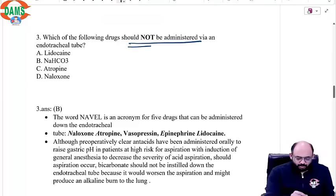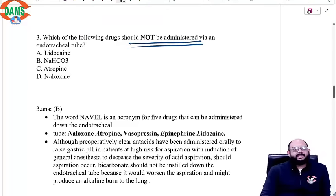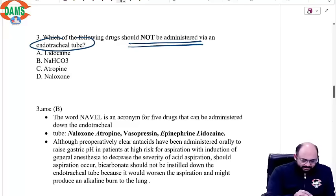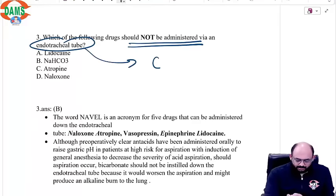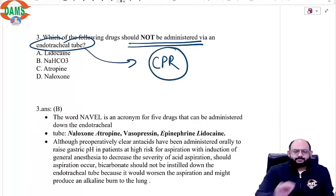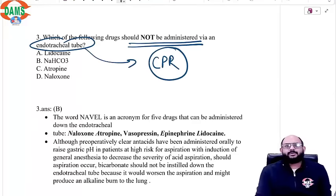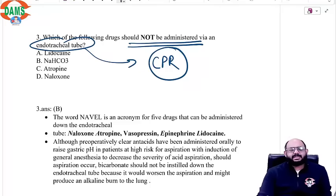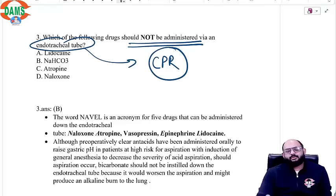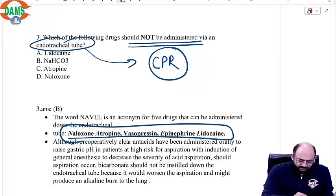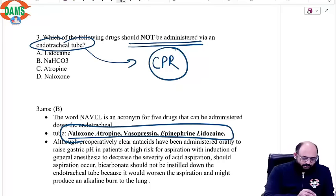The next question: which of the following drugs should not be administered by endotracheal tube? This is a question related to CPR. Normally we do not use the endotracheal route for drugs — it's only when you cannot get an IV line in an emergency and you have secured the tube. Five drugs can be given via endotracheal tube, remembered by the mnemonic NAVEL: Naloxone, Atropine, Vasopressin, Epinephrine, and Lidocaine. Therefore, you cannot give sodium bicarbonate via the endotracheal tube.